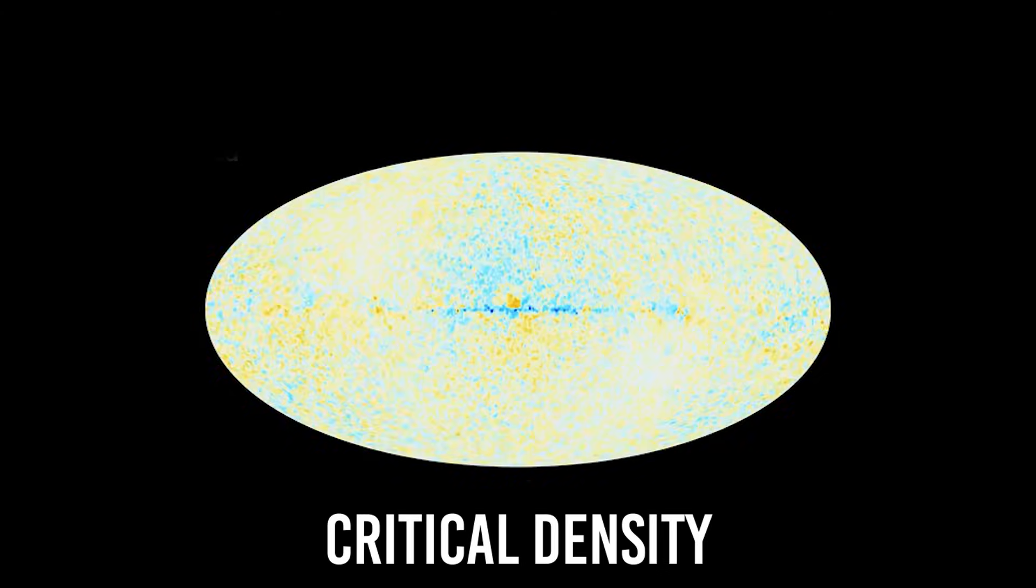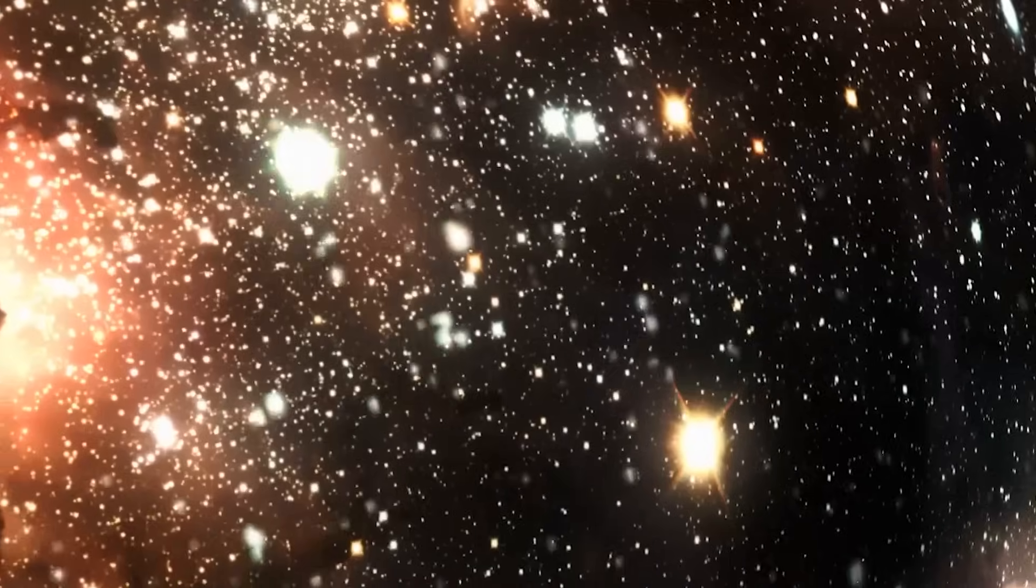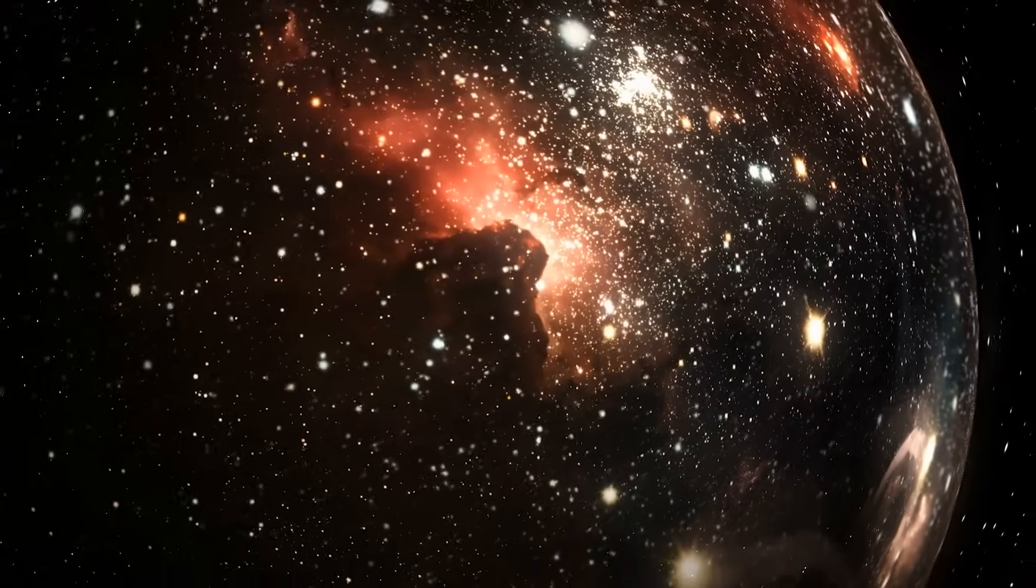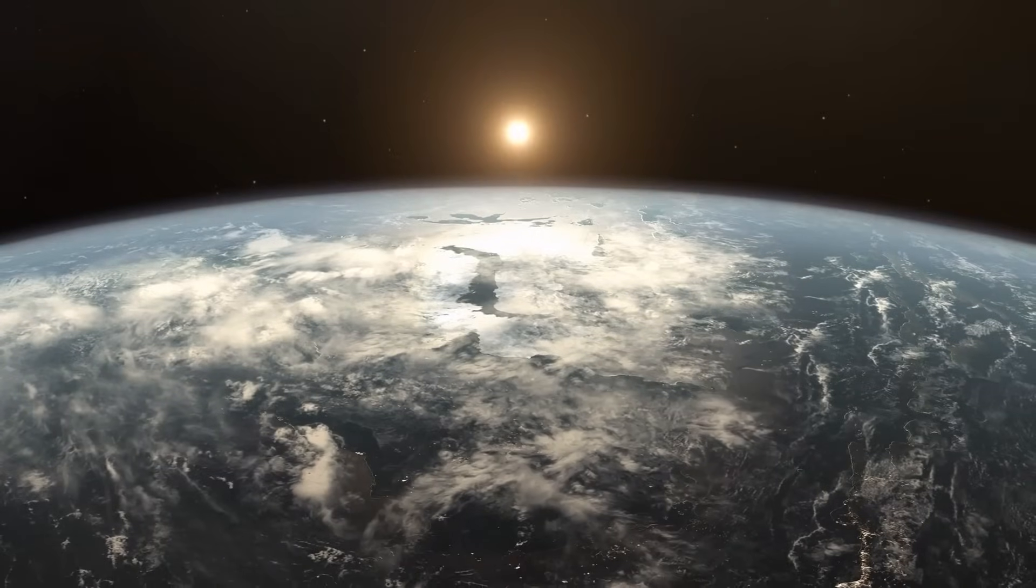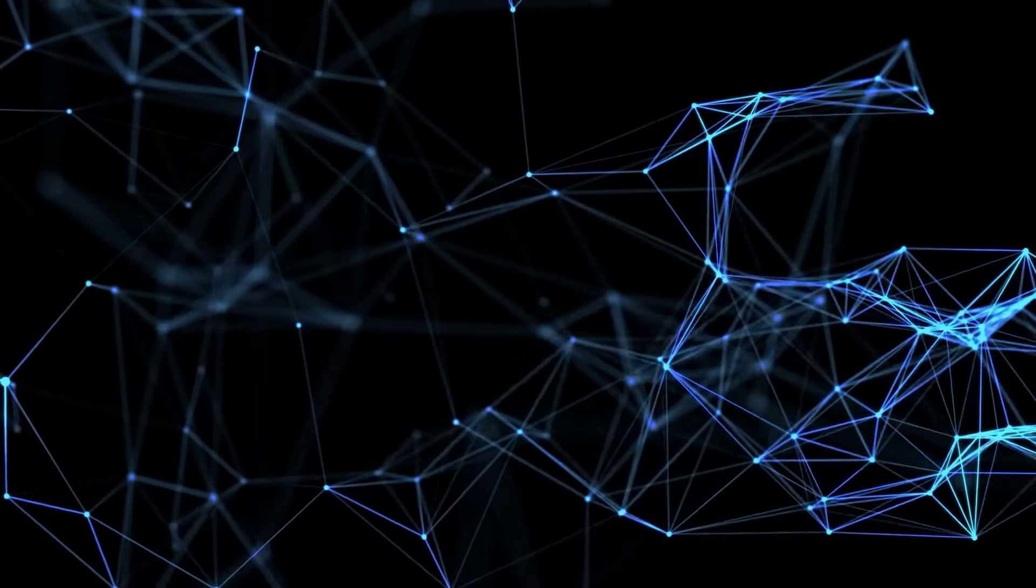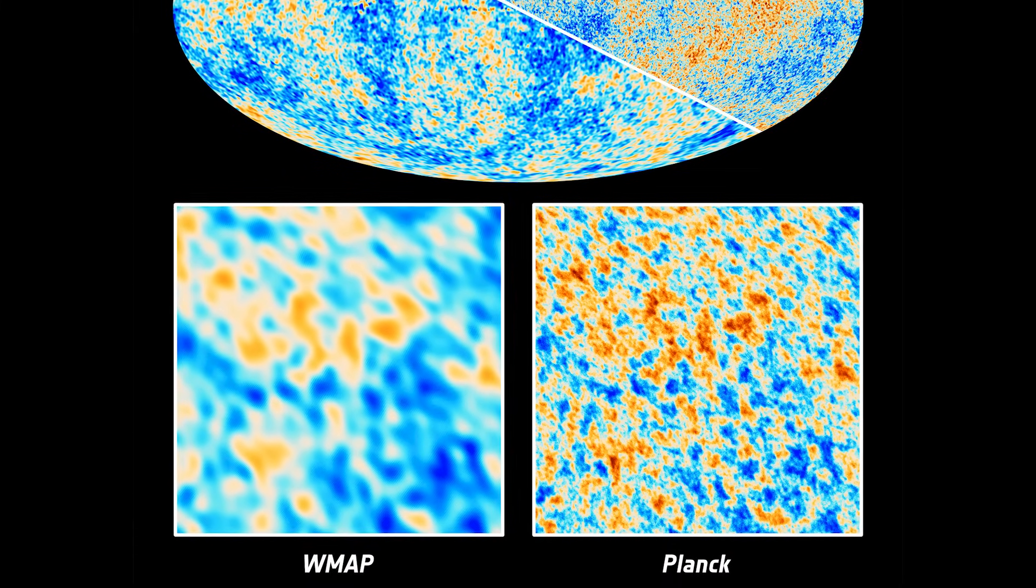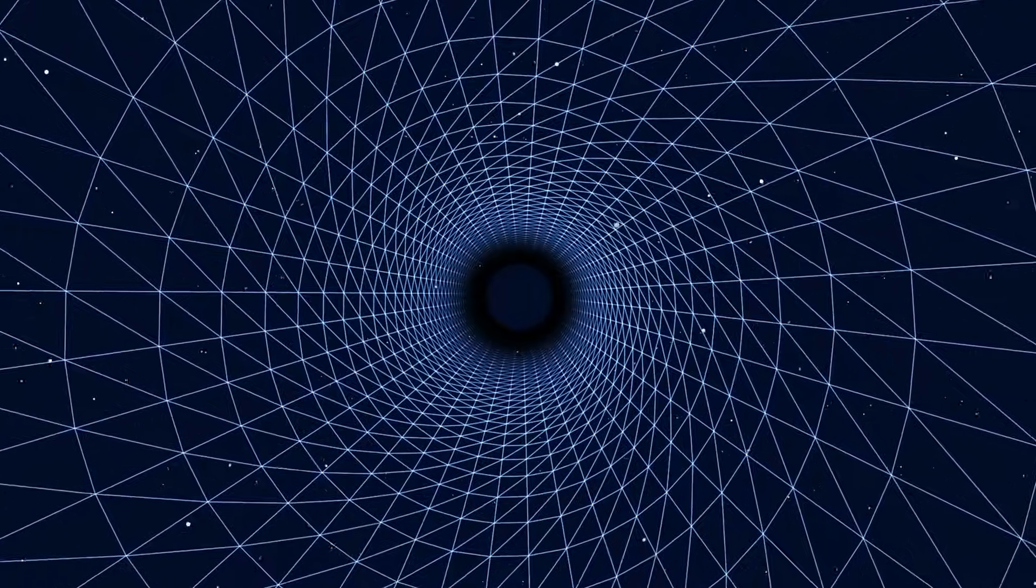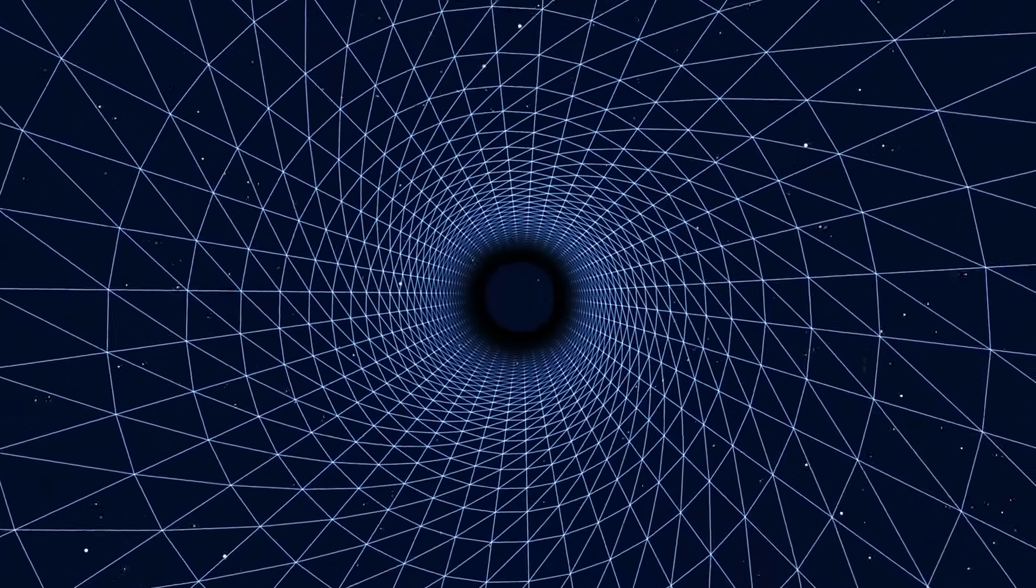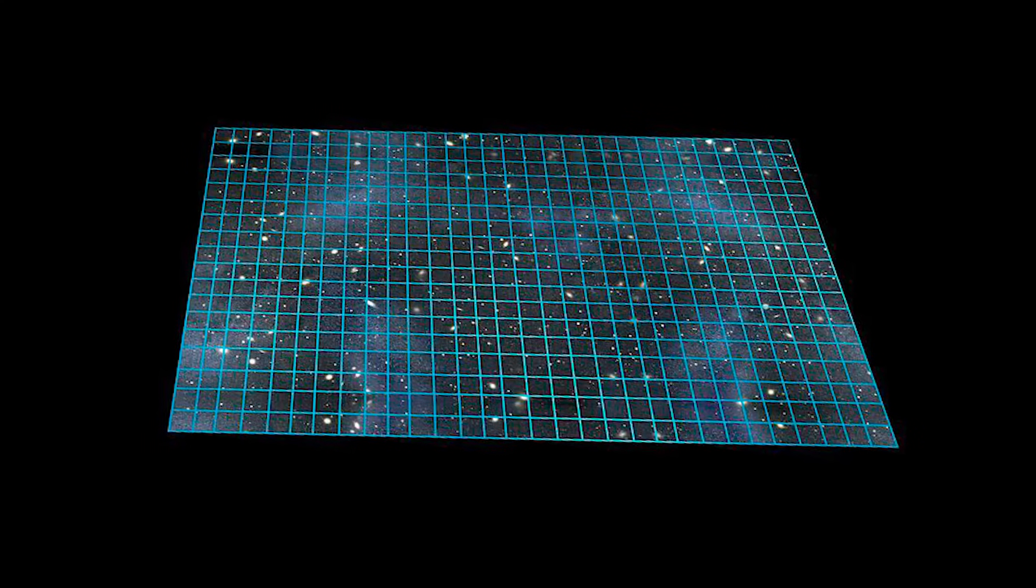But this result doesn't explain everything. A flat universe is not necessarily infinite—it could be extremely large yet still finite in volume. And this flatness may apply only to the observable portion of the universe. Beyond our observational horizon, space could take on a different geometry. So these findings describe the shape not of the entire universe, but only of the part we can observe. The shape of the universe also determines how it will behave in the future. In a curved universe, expansion cannot continue forever—at some point it may slow down and reverse. In a flat universe, however, expansion either remains steady or accelerates under the influence of dark energy.